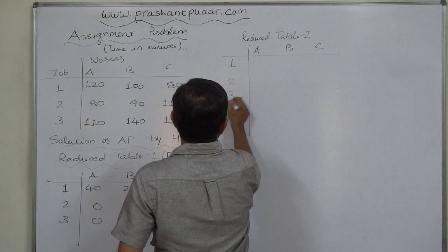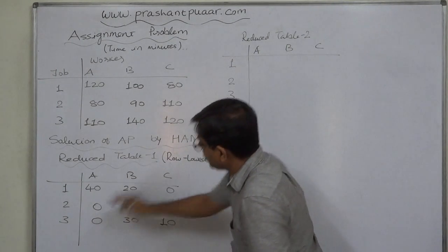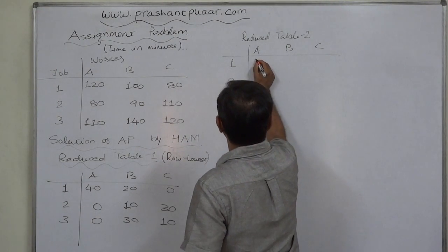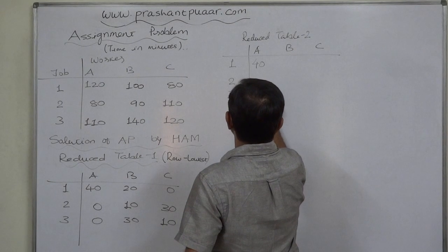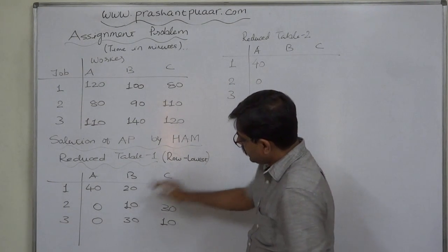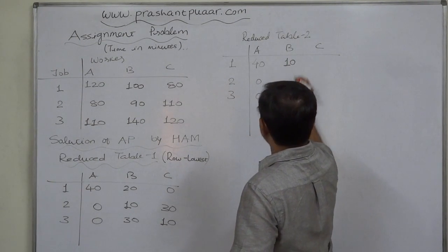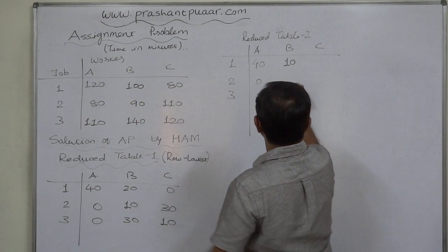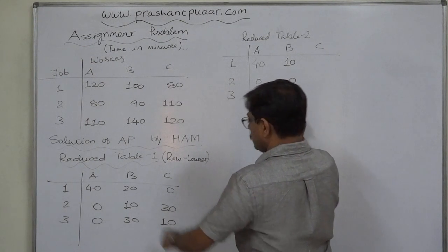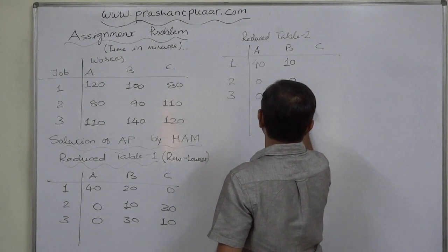Performing column subtraction: 40 minus 0 is 40, 0 minus 0 is 0, 20 minus 10 is 10, 10 minus 10 is 0, 30 minus 10 is 20.